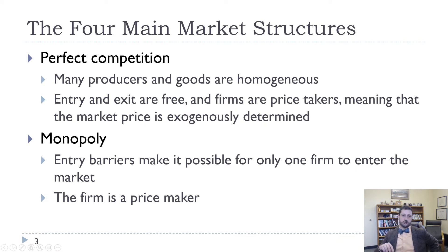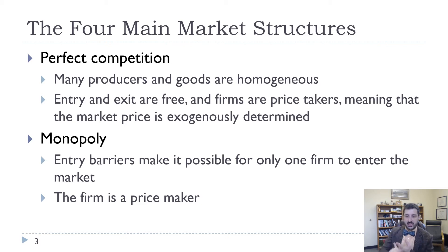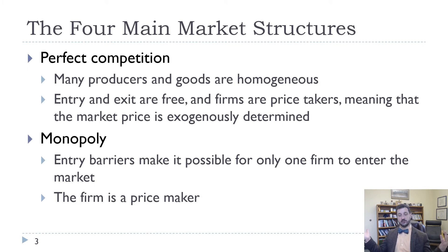Just a reminder of our four main market structures. Perfect competition: many producers, goods are homogeneous, entry and exit are free — which is really important and we're going to talk about entry in this chapter — and firms are price takers with a horizontal demand curve. They can produce as much as they want at the market price, but that price is determined by market forces. Monopoly, on the other hand, has only one firm. Entry barriers make it possible for there only to be one firm, which could be a natural monopoly with decreasing average cost. The firm is a price maker and can choose the point on its demand curve where marginal revenue equals marginal cost to maximize profit.